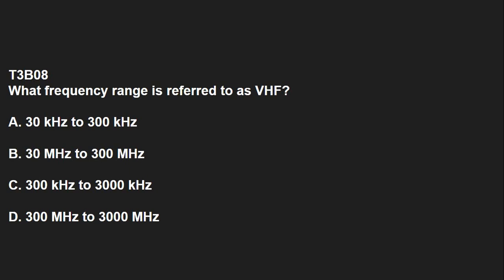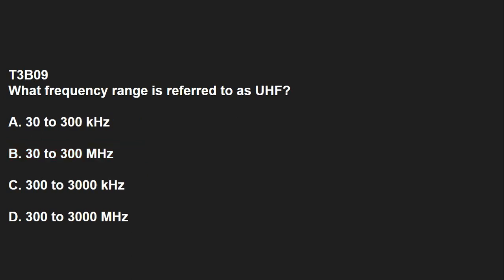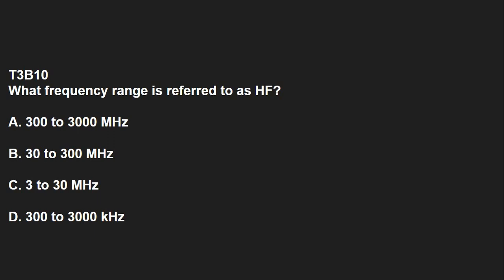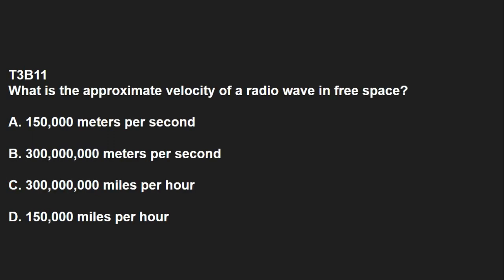T3B08: What frequency range is referred to as VHF? That answer is 30 megahertz to 300 megahertz. T3B09: What frequency range is referred to as UHF? That would be 300 megahertz to 3,000 megahertz. T3B10: What frequency range is referred to as HF? That answer is 3 to 30 megahertz. T3B11: What is the approximate velocity of a radio wave in free space? That is 300 million meters per second.